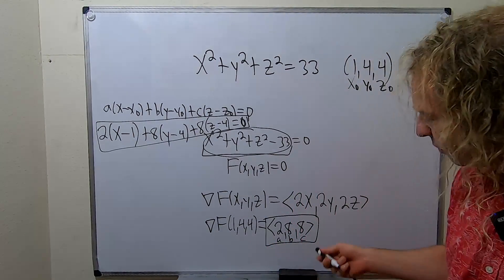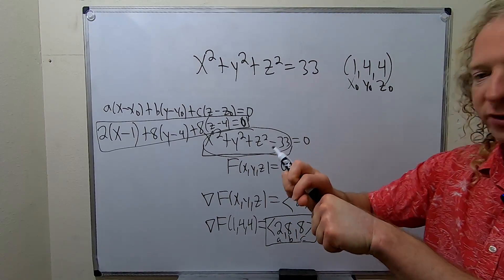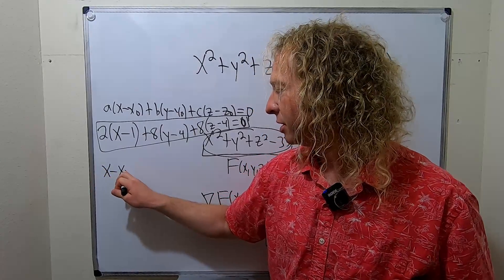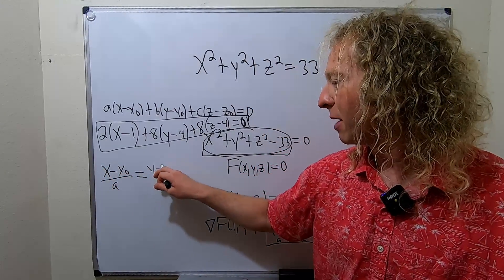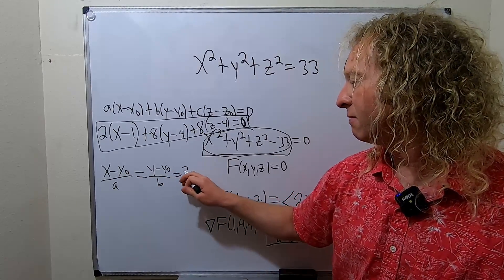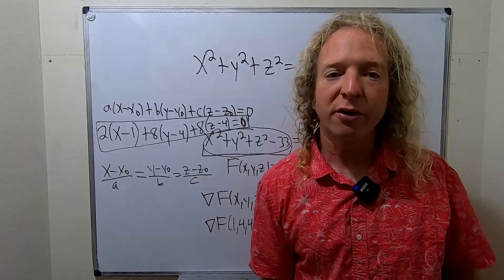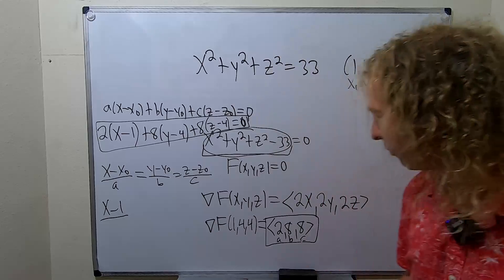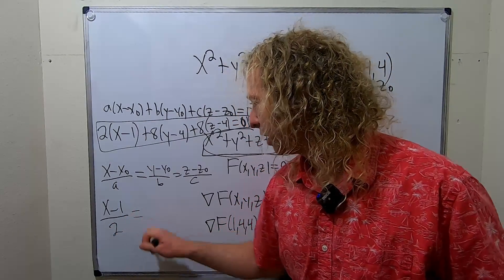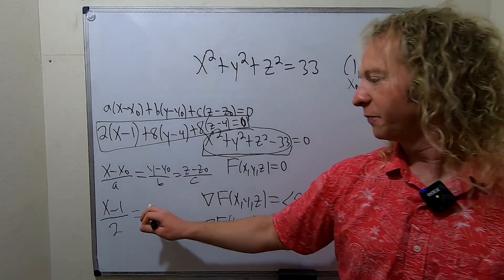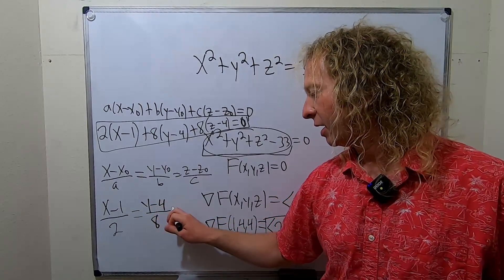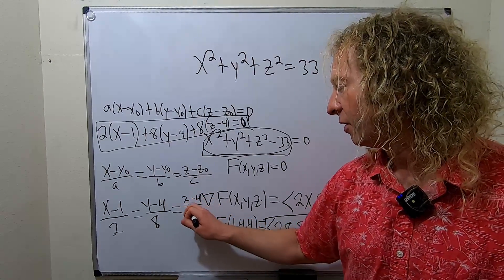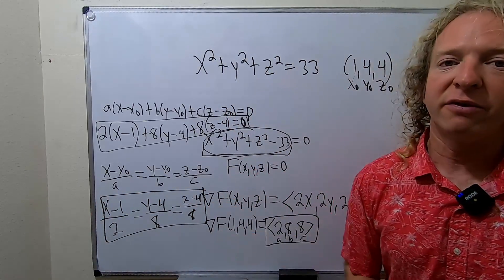For the normal line, this gradient vector is normal to the sphere, so we use the symmetric equations formula: (x - x₀)/A = (y - y₀)/B = (z - z₀)/C. Plugging everything in: (x - 1)/2 = (y - 4)/8 = (z - 4)/8. That is the equation of the normal line. You get everything from the gradient vector because it's normal to your level surface.